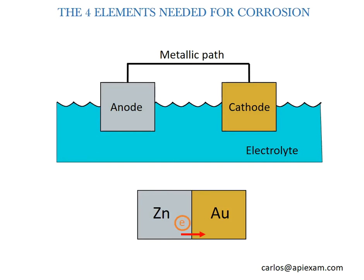Corrosion, according to API 651, is the deterioration of a metal that results from a reaction with its environment. Metals that are more electropositive or anodic will corrode more easily, and metals that are more electronegative or cathodic are more corrosion resistant. When two dissimilar metals are in contact in the presence of an electrolyte, the electropositive metal will corrode.